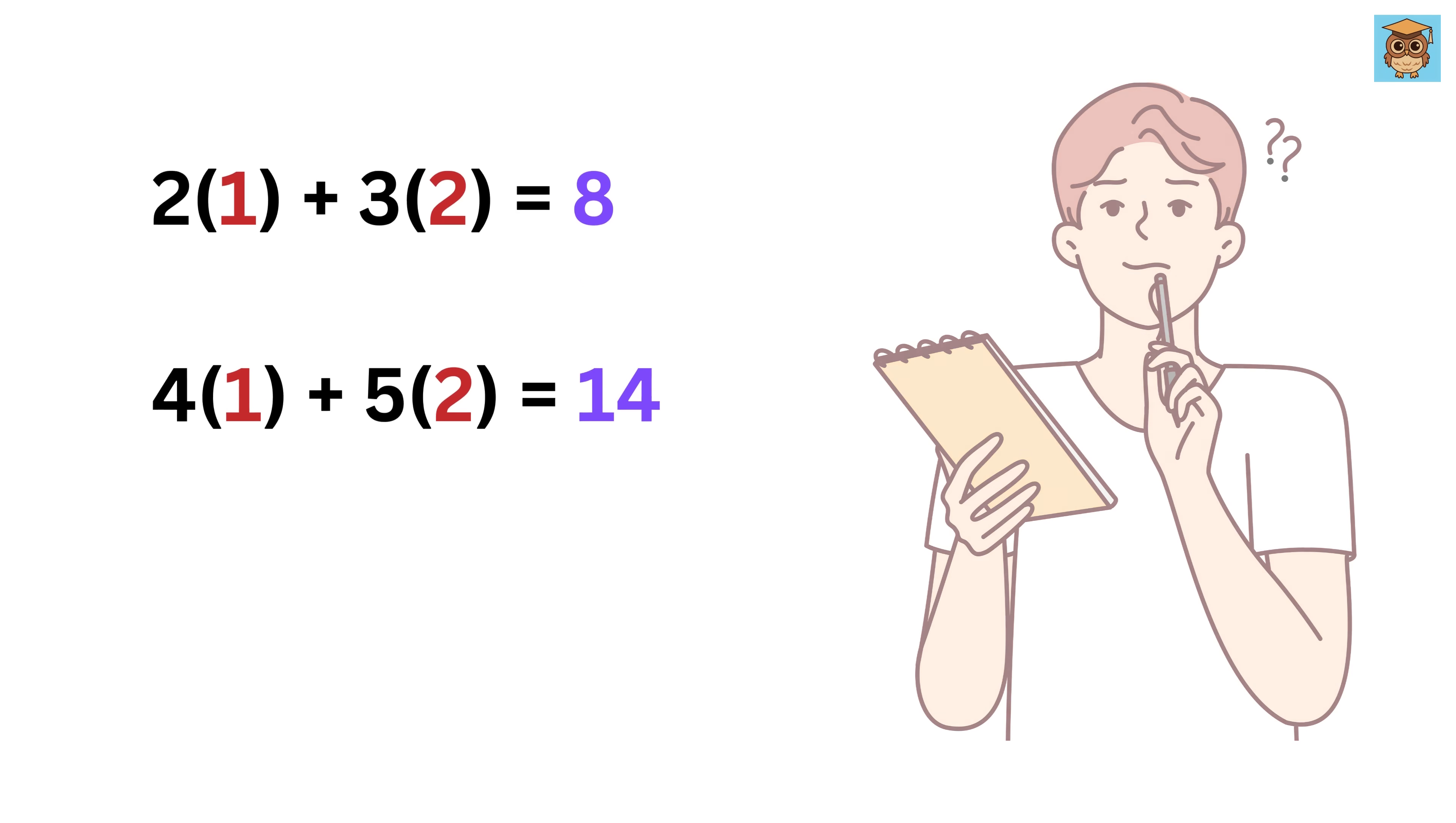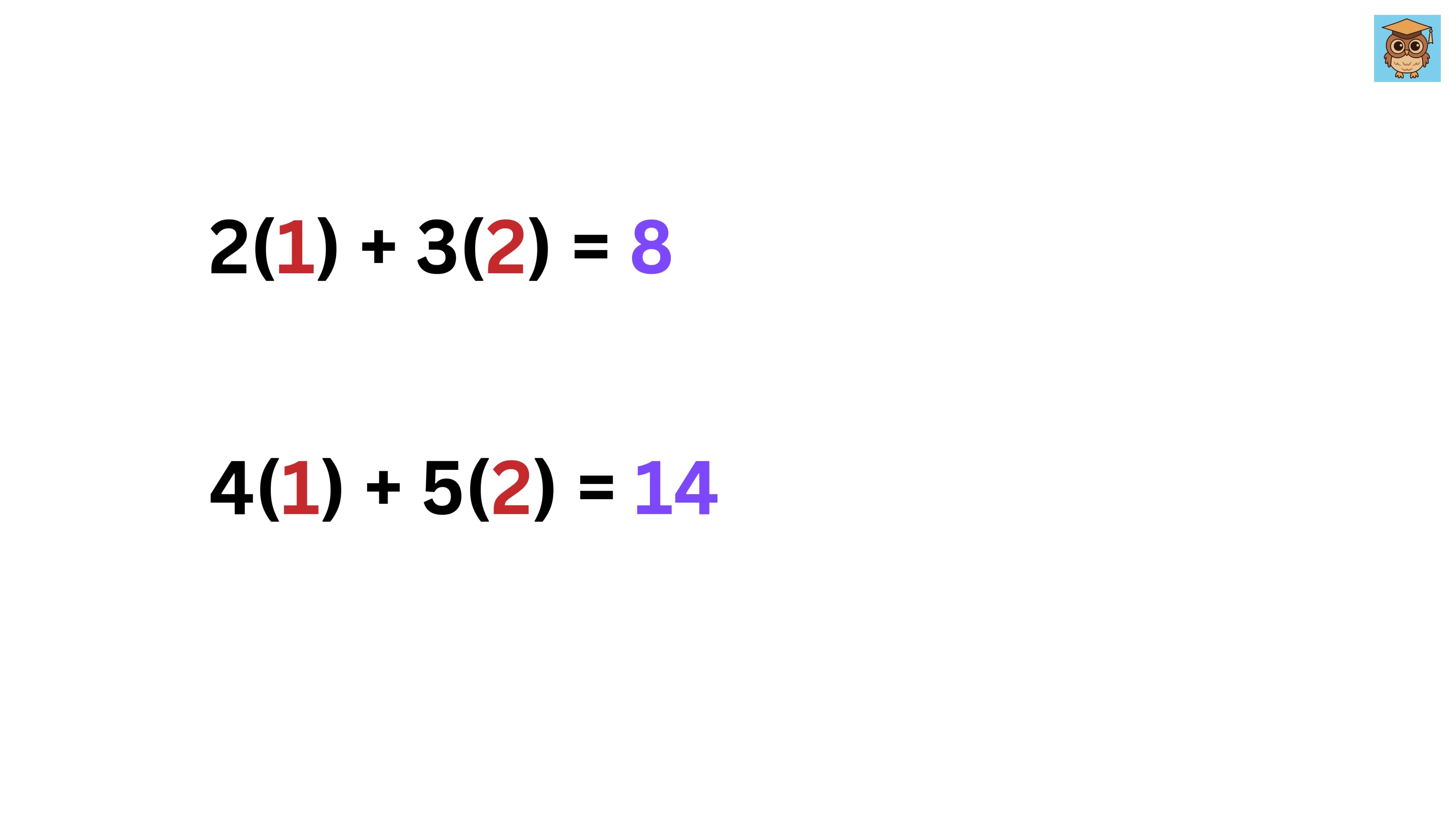Now let's take a step back and see what just happened. We took the number 1 and multiplied it by 2. Then we took the number 2 and multiplied it by 3. Finally, we added both results together to get 8. We did the same thing again. We took the number 1, multiplied it by 4, took the number 2, multiplied it by 5, and added both results to get 14.